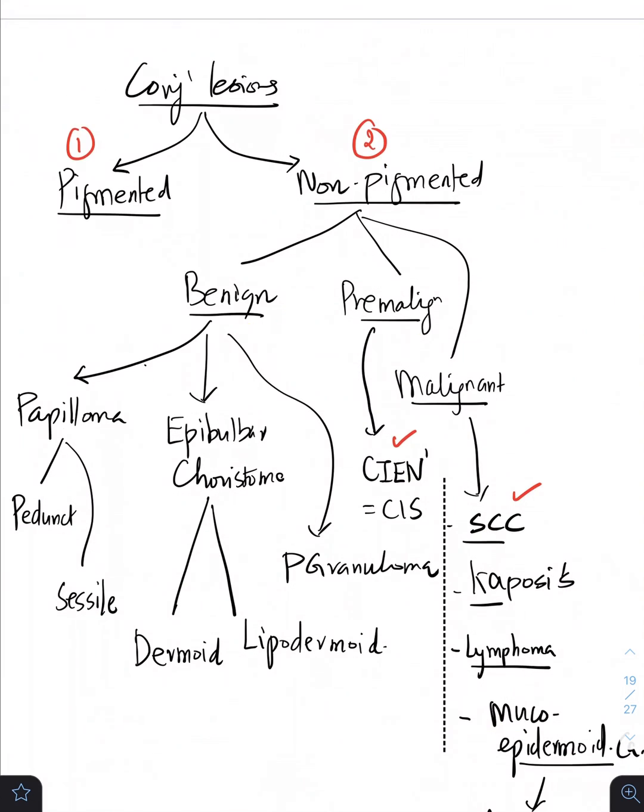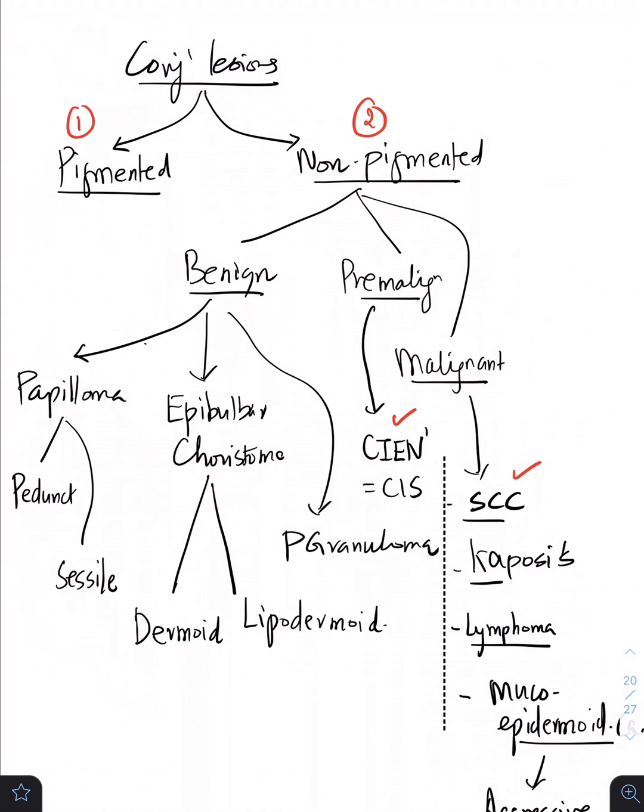So the non-pigmented lesions are going to be benign, pre-malignant, and malignant. The benign lesions are going to be papillomas, the epibulbar choristomas which include both dermoid and lipodermoid, the third is going to be the pyogenic granuloma.